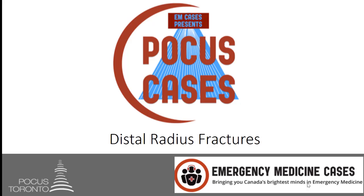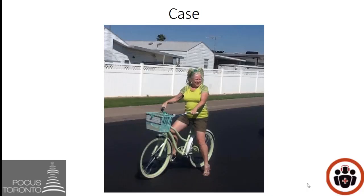Hi everybody and welcome back to POCUS cases. In this episode we're going to talk about one of the most common fractures we see in the emergency department: the distal radius fracture. In this case we have a 60-year-old female who's riding her bike — notice the lack of helmet — and when she's going across oncoming traffic she falls off her bike and lands on her wrist. She has a FOOSH injury, there's a deformity, and she shows up to her local emergency department.